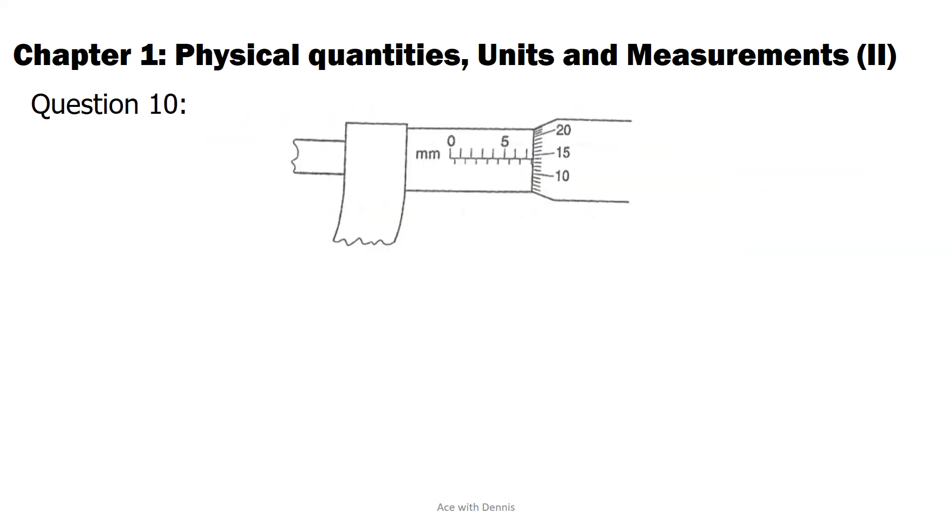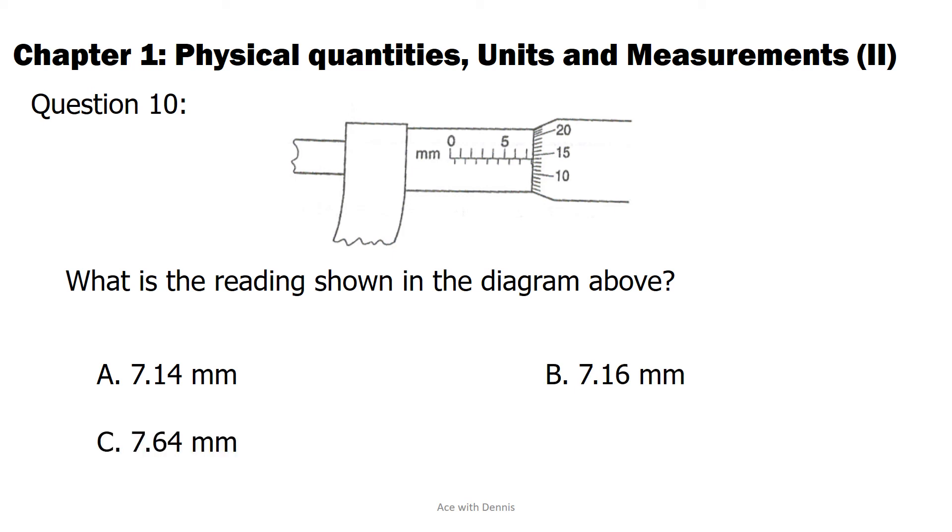Question 10. What is the reading shown in the diagram above? A. 7.14 mm. B. 7.16 mm. C. 7.64 mm. D. 5.64 mm.